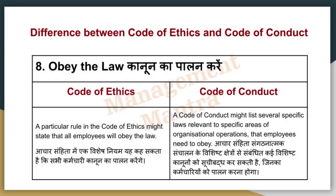Next, on the basis of rules: a particular rule in the Code of Ethics might state that all employees will obey the rules in a general sense. The Code of Conduct might list several specific laws relevant to a specific area of organizational operations that employees need to obey.